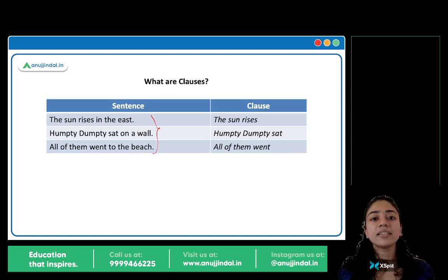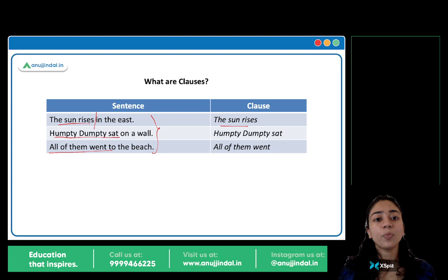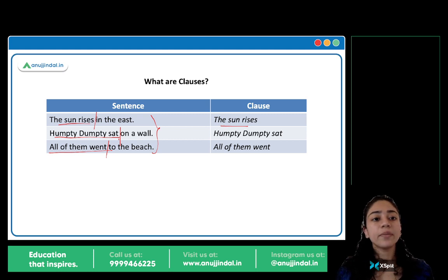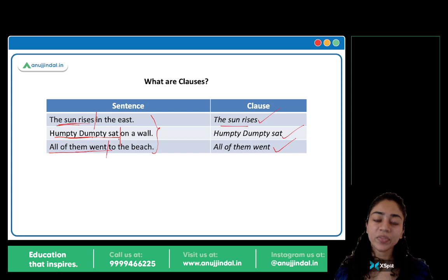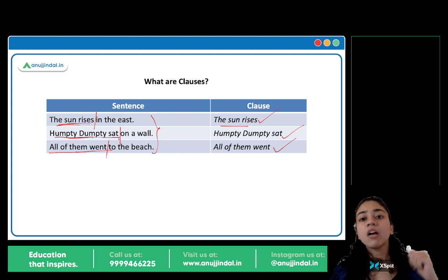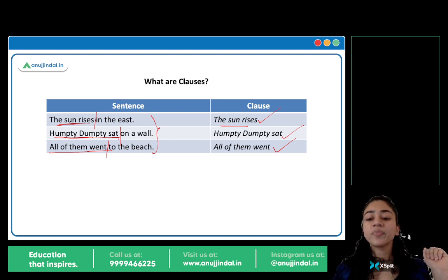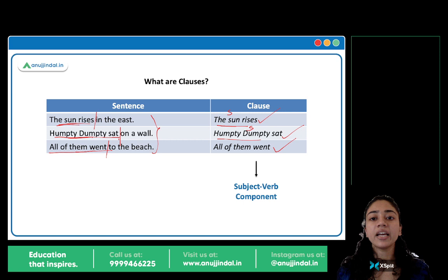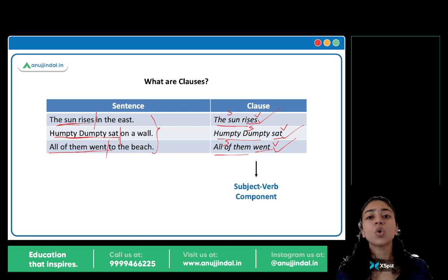Now let's look at clauses, using the same three sentences. 'The sun rises' is the clause. 'Humpty Dumpty sat' is the clause. 'All of them went' is the clause. What is the difference between phrase and clause? A phrase has no subject and no verb. A clause contains both a subject and a verb — there is a subject-verb component. 'The sun' is the subject, 'rises' is the verb. 'Humpty Dumpty' is the subject, 'sat' is the verb. 'All of them' is the subject, 'went' is the verb.